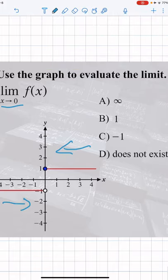So as we're approaching 0 from the left, you can see that we're getting closer and closer to the y value of negative 1.